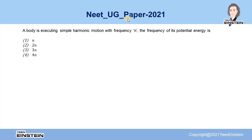Hello students, let us solve a problem from NEET UG paper 2021. The problem states that a body is executing simple harmonic motion with frequency n. You have to find out the frequency of its potential energy and select the correct option out of the four given.